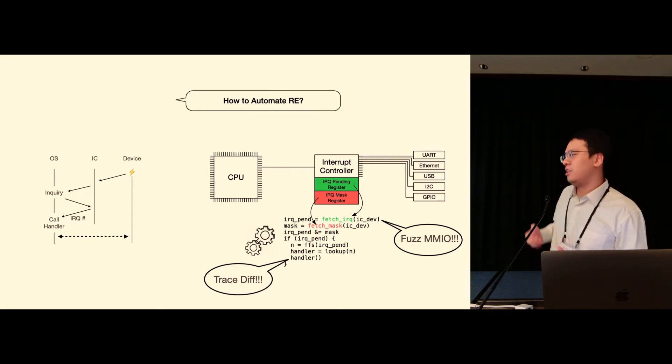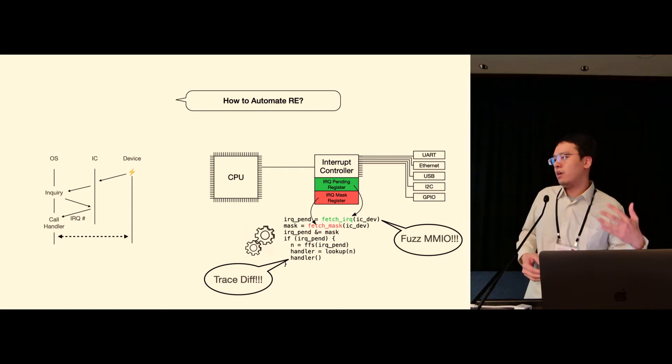So now our idea here is that we can simulate this interrupt controller device and use fuzzing to enumerate all the possible IRQ numbers so that we can collect many different traces that is handling different IRQs.